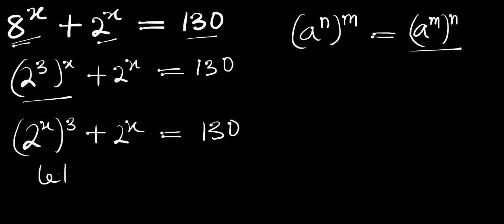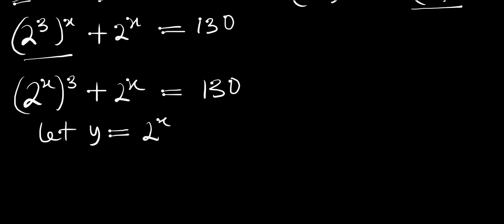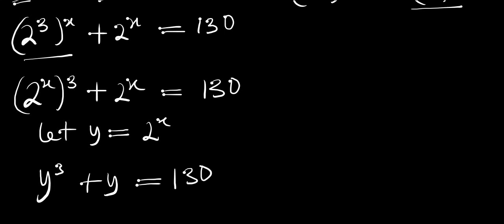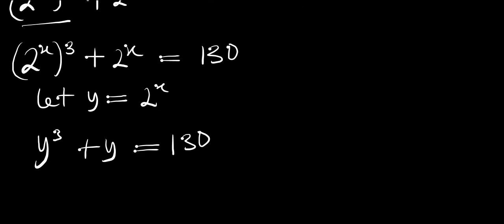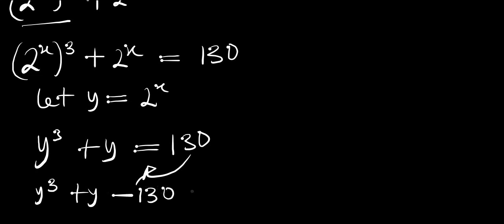From here we can say: let y equal 2^x. So if y equals 2^x, we are going to have y^3 + y = 130. Now the next thing is for us to rearrange this equation by moving terms over: y^3 + y - 130 = 0.